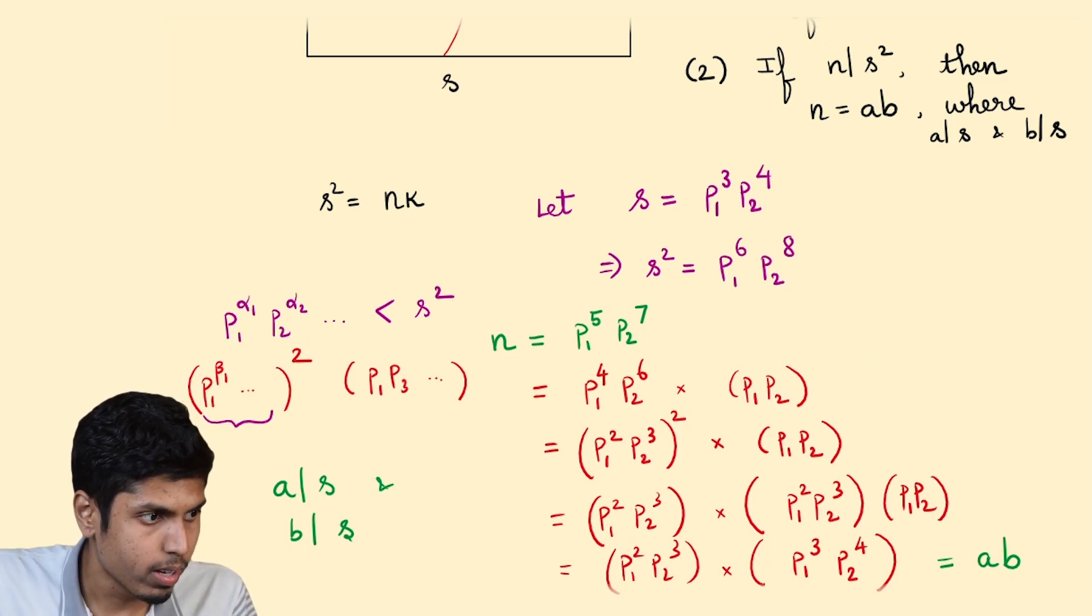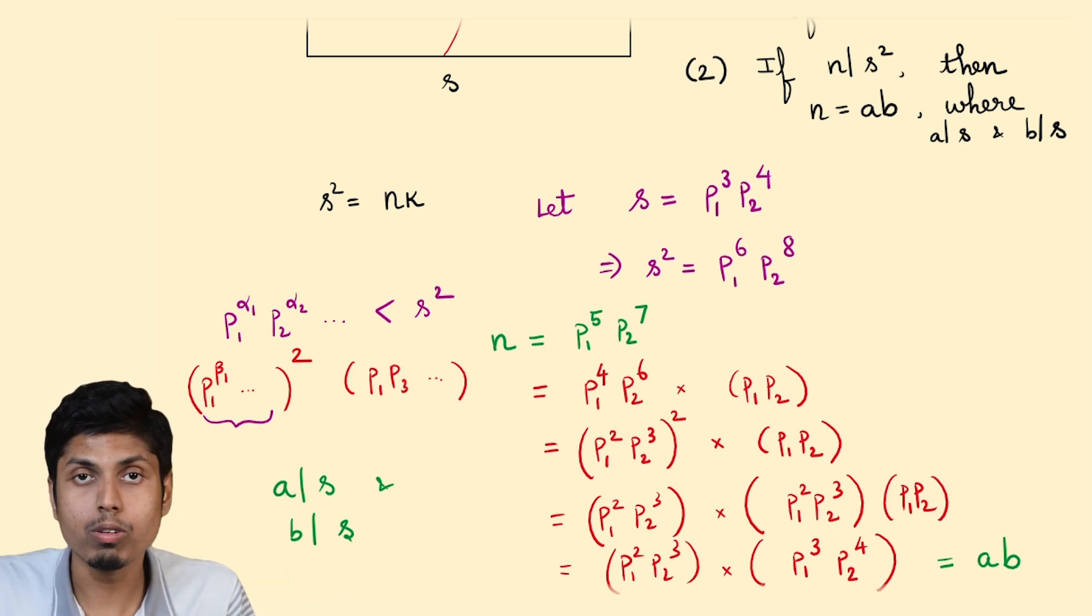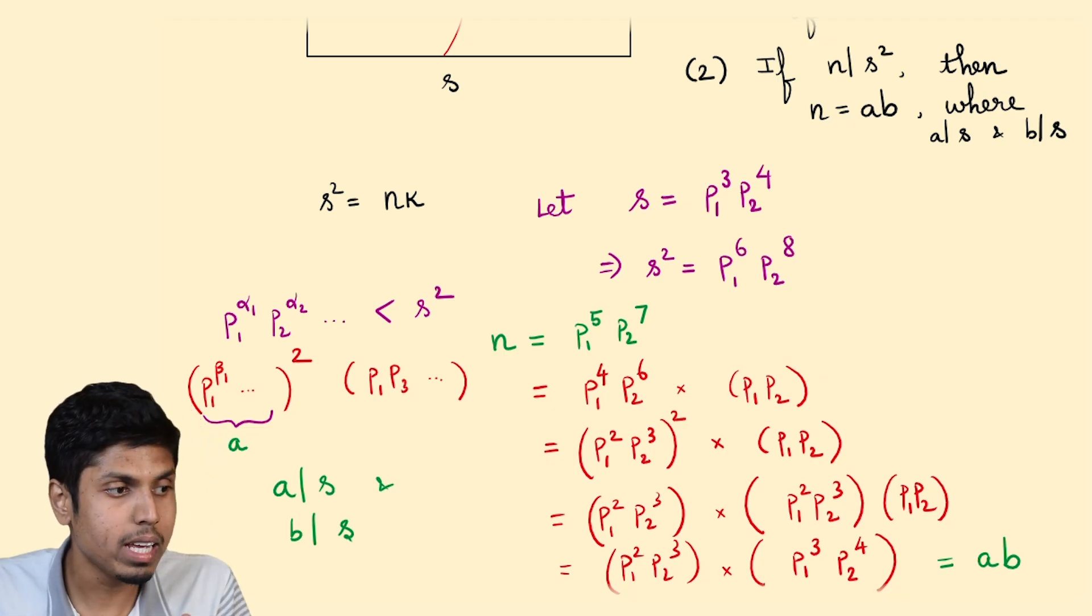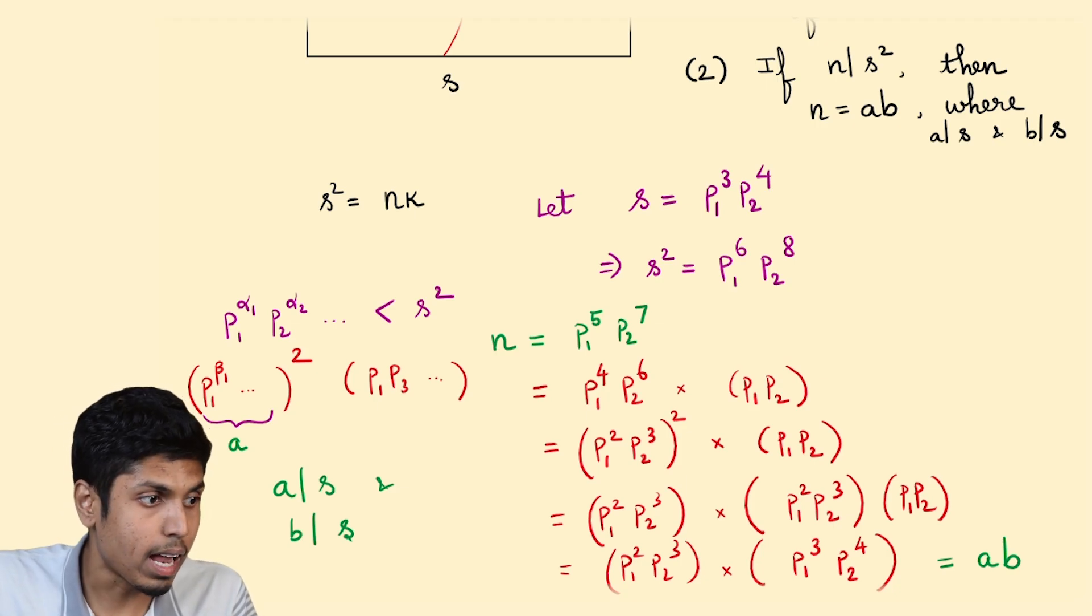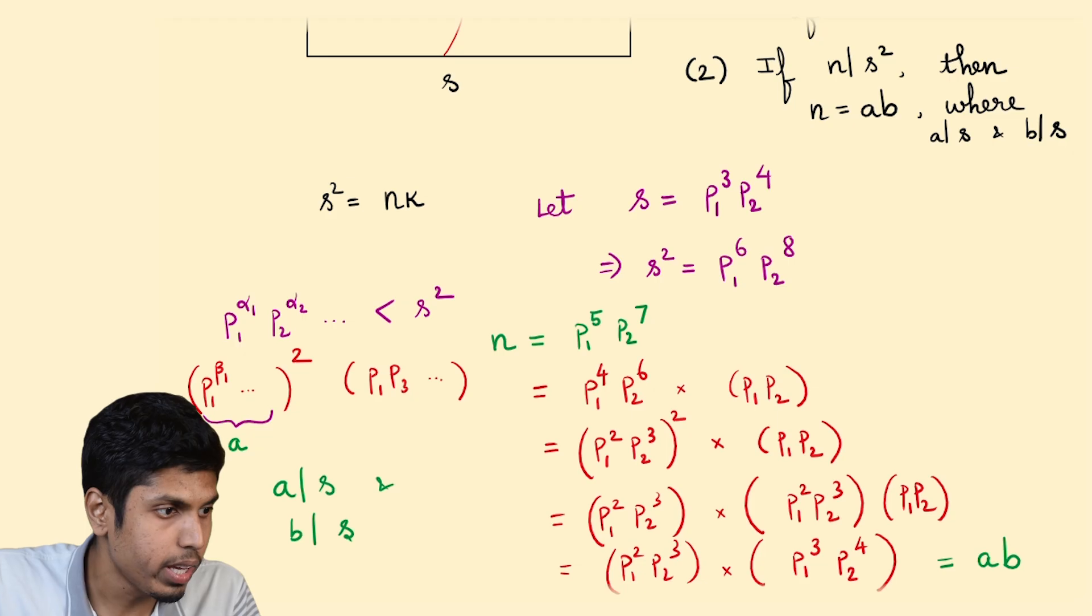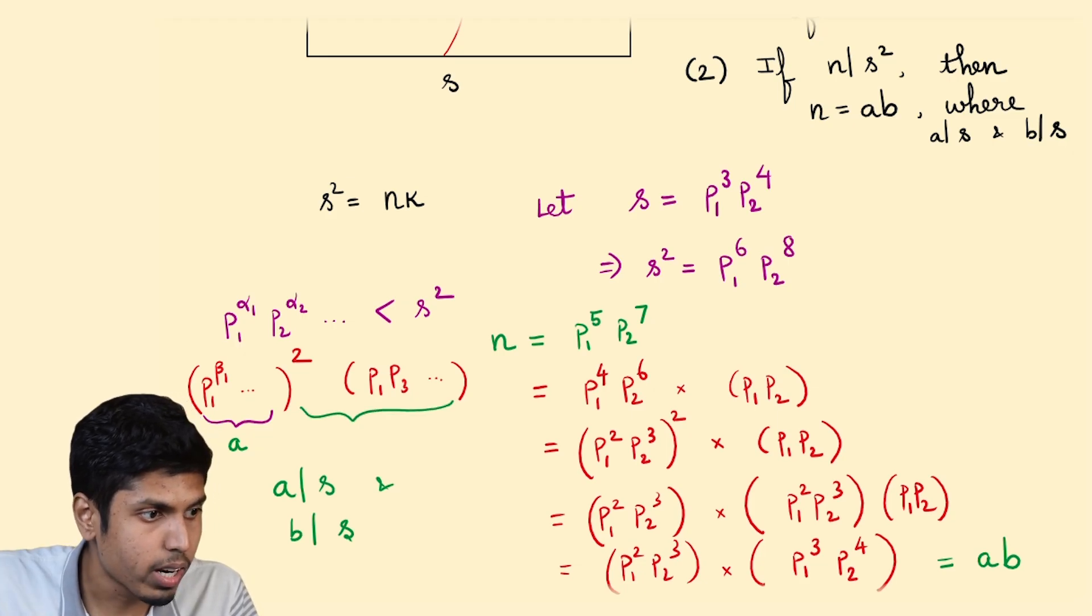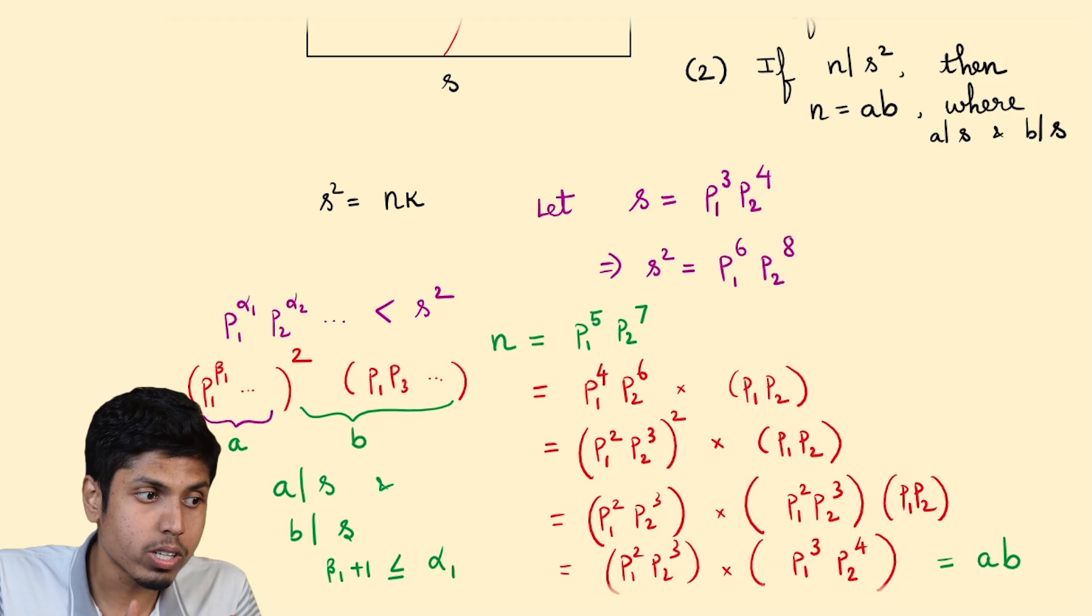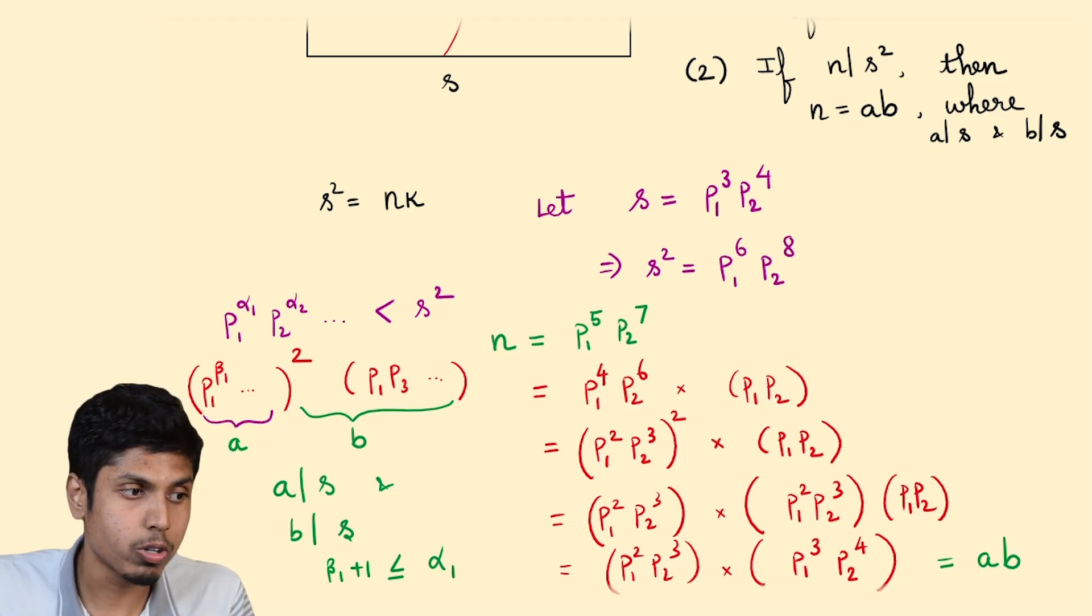And now you are going to take one of these as the value for the factors, so it must be A. And beta 1, beta 2 and so on will all be less than the alpha 1 by 2 value, alpha 2 by 2 and so on. So we can assume this. Now for B, by similar argument, we know that beta 1 plus 1 is less than or equal to alpha 1. And this ensures that your product B, which is beta 1 plus 1, is going to be less than S, because each exponent of these primes are less than the actual exponent of S.